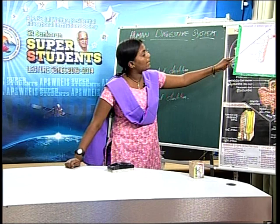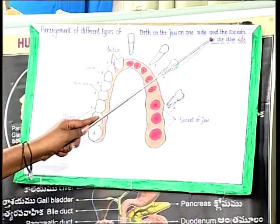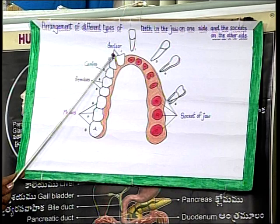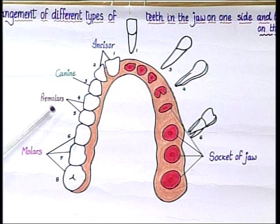There is an arrangement of different types of teeth in each half side of the jaw: incisors, canines, premolars and molars, in order. These are represented as the dental formula.